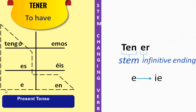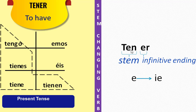For TÚ, ÉL/ELLA/USTED, and ELLOS/USTEDES, they follow the stem-change rule — you replace the A with IE. So: TÚ TIENES (you have), ÉL/ELLA TIENE (he/she has), USTED TIENE (you have, formal), NOSOTROS TENEMOS (we have — no stem change here), VOSOTROS TENÉIS (you all have), and ELLOS/ELLAS TIENEN (they have).